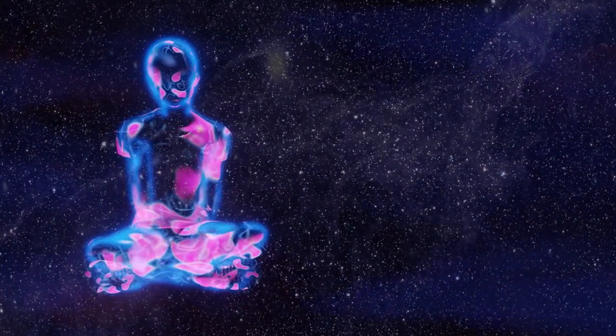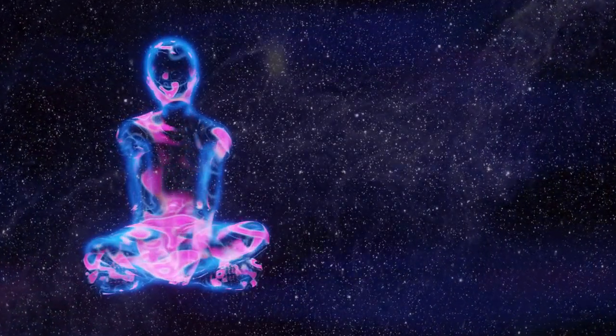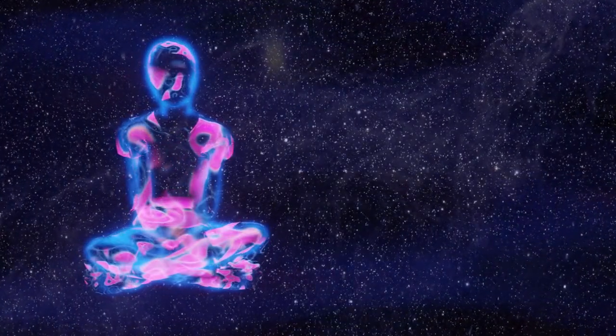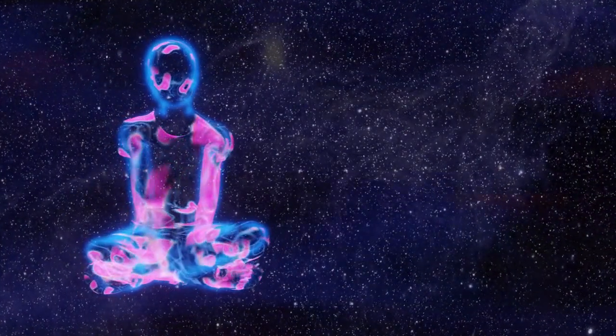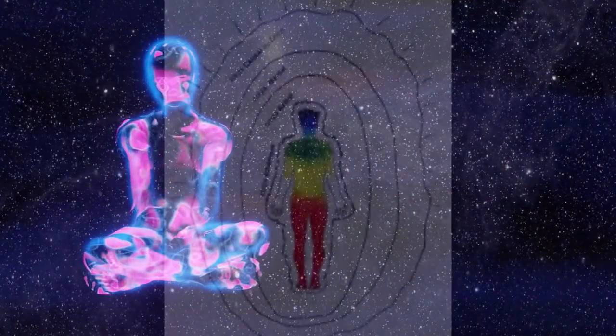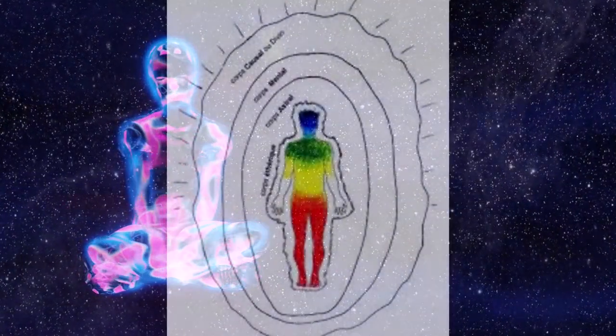Since about 1939, auras have been photographed using a Kirlian camera, giving more proof to their existence. Proof that every living thing has its own aura or vibration which is moving and pulsating, and hence changing.